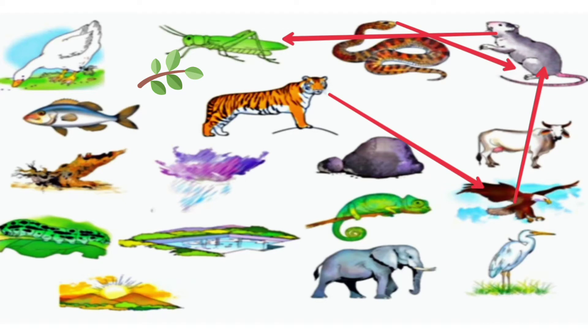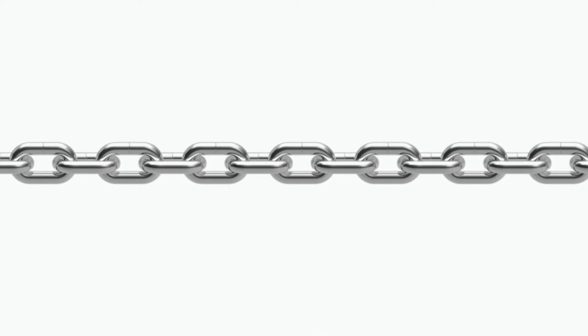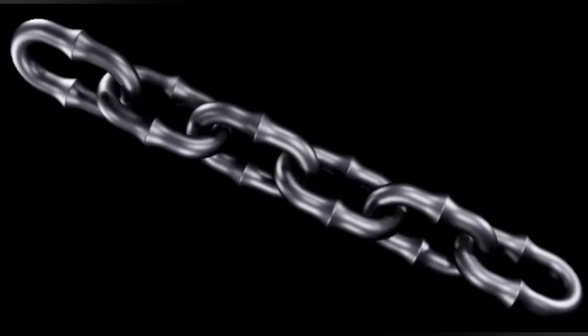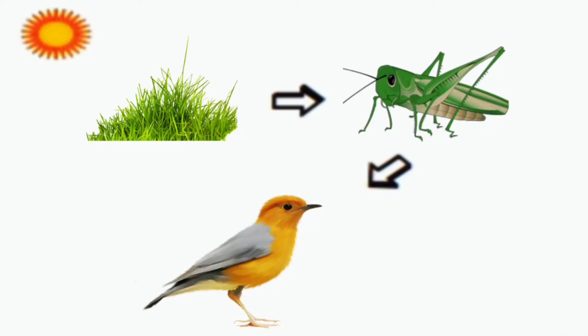Now let's see the food chain. Look at this picture — what is this? Yes, it is a chain. There are several links in this chain and these links are joined to each other. Similarly, think of a grass, a grasshopper and a bird — they are all connected. Each of the components, that is grass, grasshopper and bird, is food for the next one.